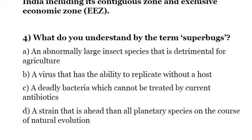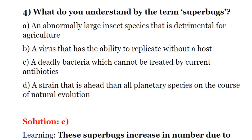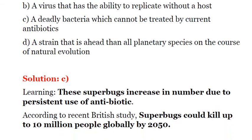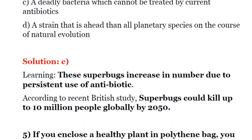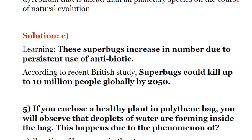Fourth question: what do you understand by the term superbugs? A — an abnormally large insect species detrimental to agriculture. B — a virus that can replicate without a host. C — a deadly bacteria which cannot be treated by current antibiotics. D — a strain ahead of all planetary species in natural evolution. Superbugs are deadly bacteria that have developed resistance to antibiotics, so the solution is C. It is expected that superbugs could kill up to 10 million people globally by 2050, making it a major concern.